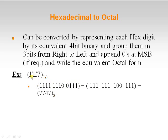Let us see how to do that. Initially I am representing F, E, and 7 in binary form using 4-bit equivalents. Now I have to group three bits from right towards left. So here: three ones, then 001, three ones, and then three ones. Writing the octal equivalent: three ones is 7, and 100 is 4.